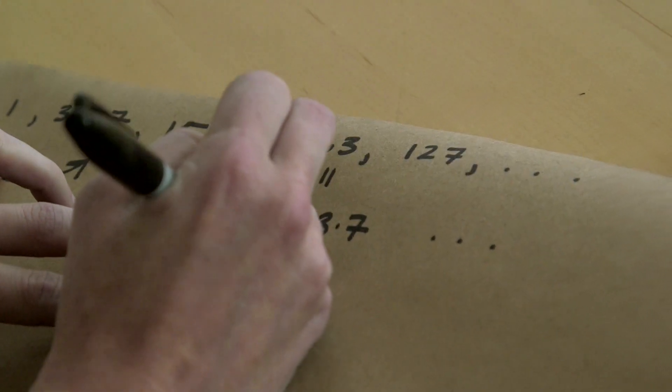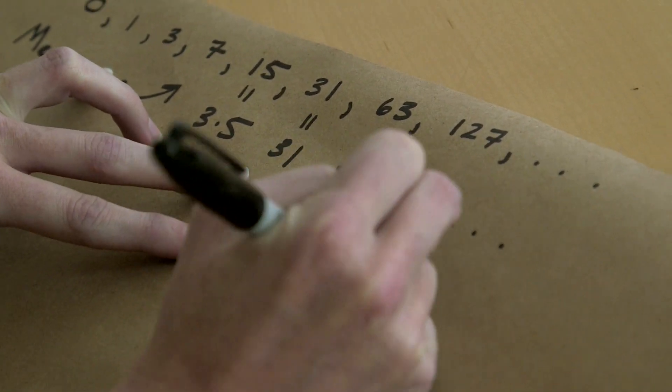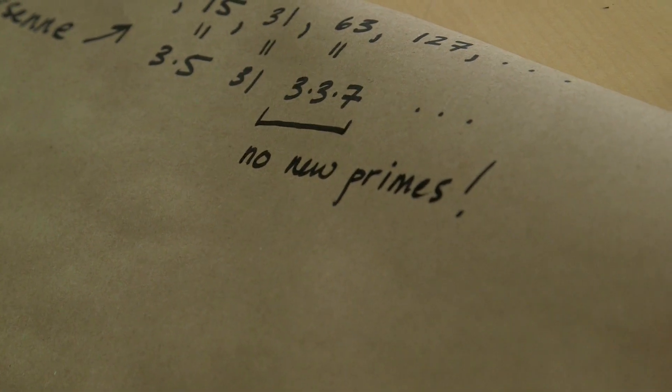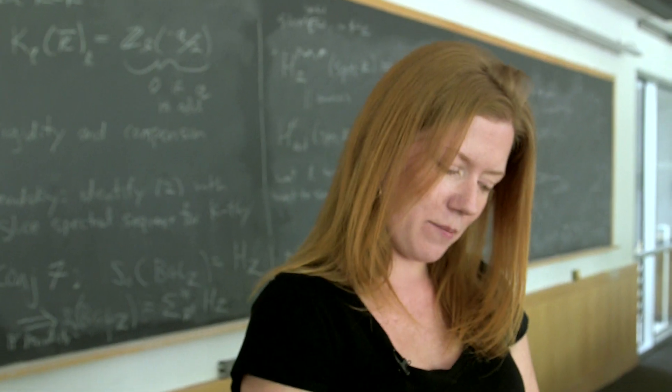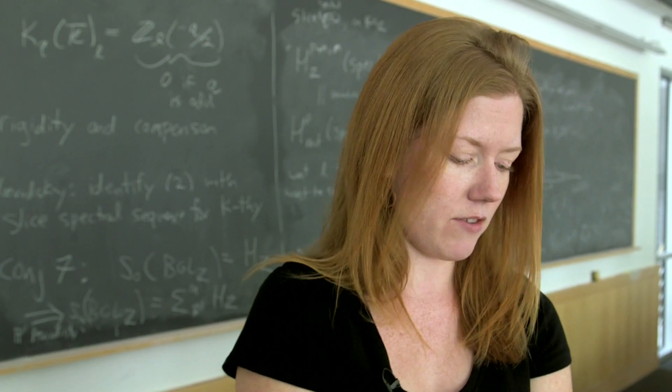But here, we run into a problem. We broke the streak. No new primes. And is that bad? Well, depends on what you're interested in. But if the question is, do we always have a new prime divisor, for the Mersenne sequence, the answer is no, because look at, the 6th element doesn't have a new prime divisor.